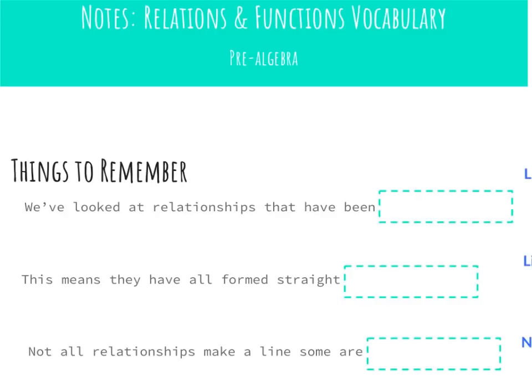The first thing we need to remember is that so far we've looked at relationships that have been linear — they've all formed straight lines. Not all relationships, however, are linear. Some are non-linear, meaning they make other shapes other than lines.